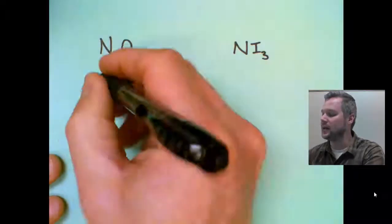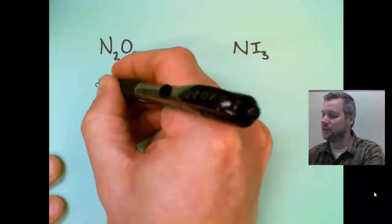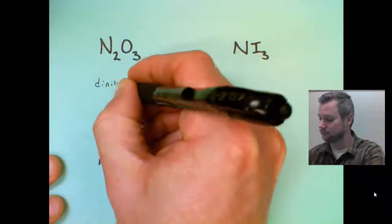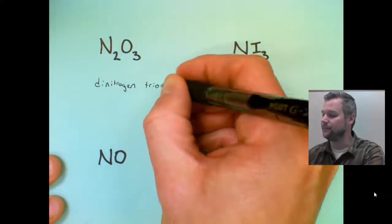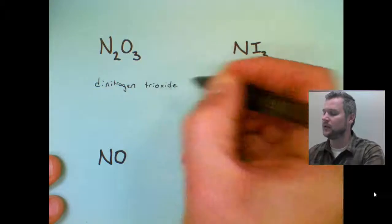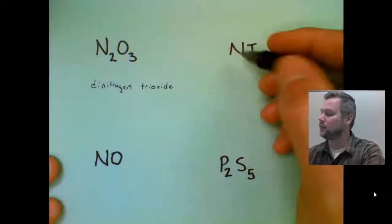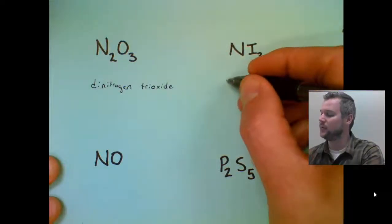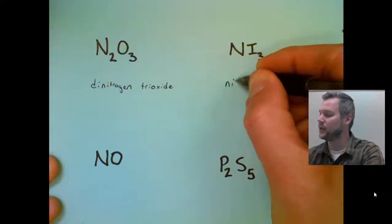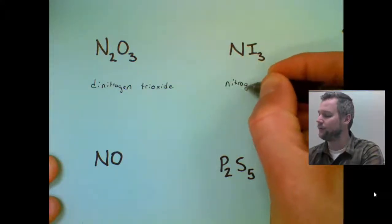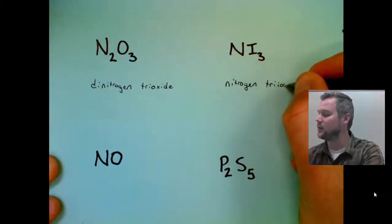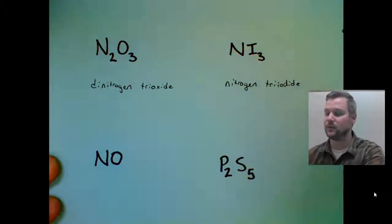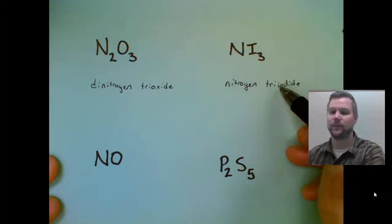So the prefix for two is di. First atom gets a full first name, di-nitrogen. Second atom prefix for three is tri-oxide. Second name, don't need a prefix for only a subscript of one. So this is just full first name, nitrogen. And then prefix tri-iodide. This is the case where we go ahead and use the double vowel to start.